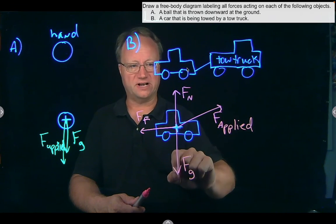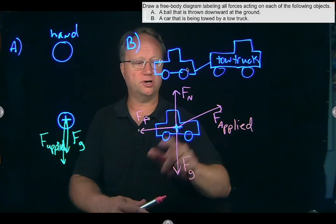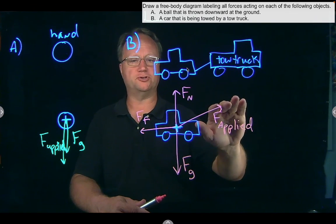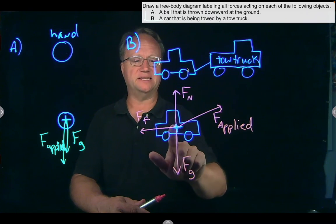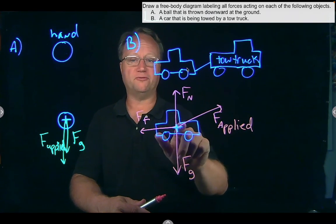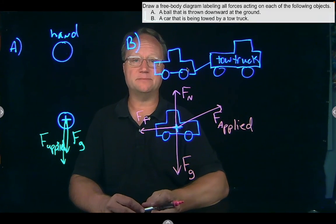So then in this situation, one field force, gravity, and then two things are in contact with the car, the truck and the ground. So that contact force of the truck, the applied force, and then the contact forces from the ground, a support force, the normal force, and a frictional force that is opposing that motion.